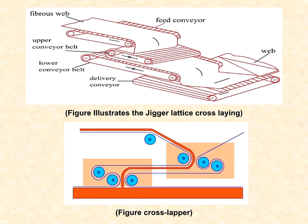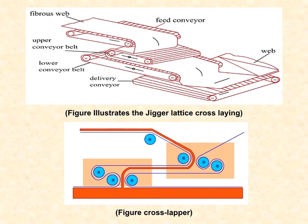In the cross lapper machine, the fibrous web input enters via a feed conveyor, then passes through an upper conveyor, lower conveyor belt, and delivery conveyor belt. The outcome is converted into the web form made of layers. In the cross lapper case, different layers can be created in a single machine — conceptually like folding a fabric back and forth in alternating directions to form one layered structure.